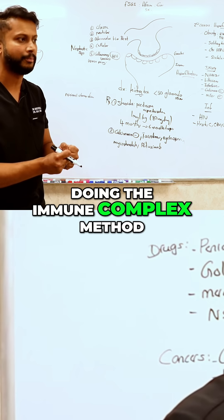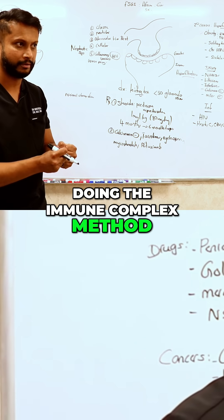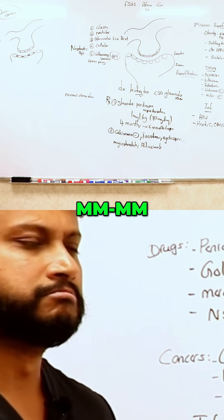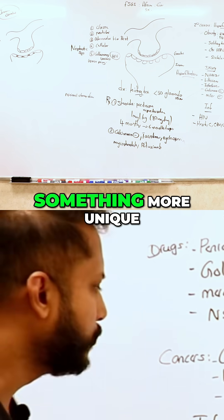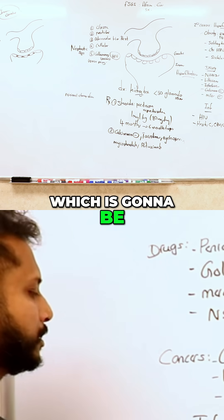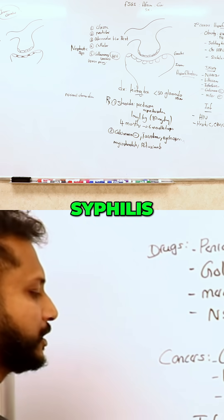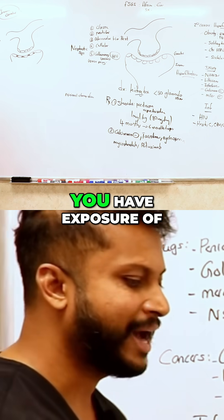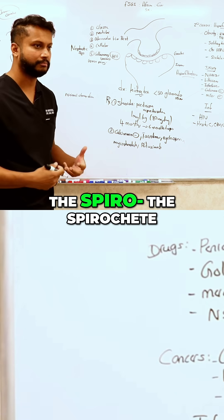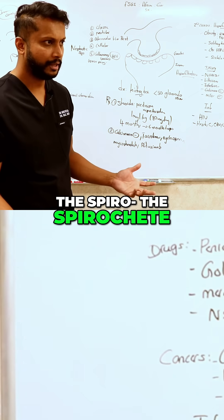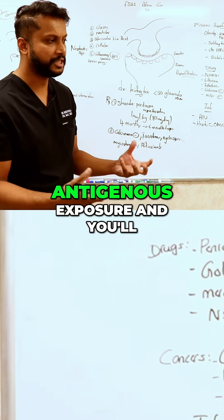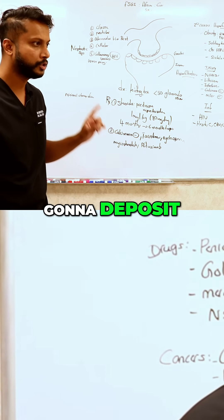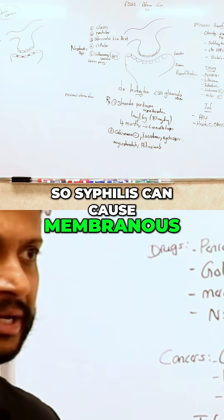The fact that you're doing the immune complex method — what are the two infections? Something more unique, which is going to be syphilis. Whenever you have syphilis, you have exposure of the spirochete, and then you'll have antigen exposure and you'll have antibodies, and you're going to deposit. So syphilis can cause membranous.